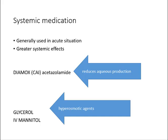Glycerol and mannitol are hyperosmotic agents given intravenously — you would have studied these in pharmacology. They cannot be given to diabetics and are contraindicated in renal failure, cardiac disease, and hepatic disease. These are reserved for severe glaucoma attacks with very high eye pressure. That covers medication for the treatment of glaucoma — it's worth revising your pharmacology notes alongside this summary.